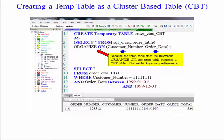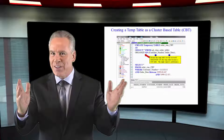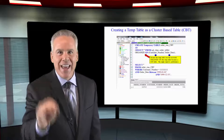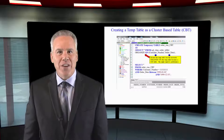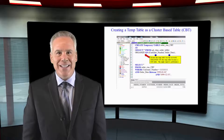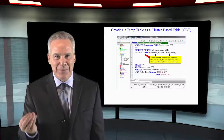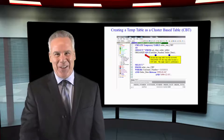Look at this beautiful query: select everything from my CBT table where customer number is equal to this, and order date between this and this. The whole purpose of this — not every extent is going to have to be read — and that's why you create a CBT table, because you're going to be querying with multiple columns in the WHERE and AND clause.